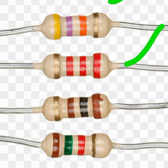These different colors on the body of resistors indicate that they have different values. So based on the color codes used, each of these resistors has a different value.